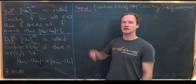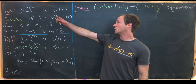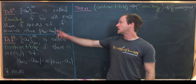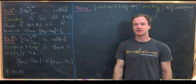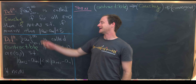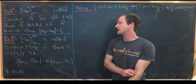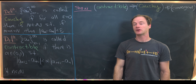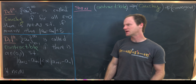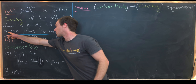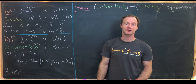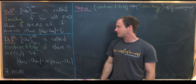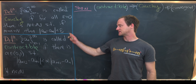Let's recall the following definition. A sequence of real numbers is called Cauchy if for all epsilon greater than zero there is a natural number N such that if m and n are both bigger than capital N — with m greater than n greater than capital N — then the difference |a_m - a_n| is less than epsilon.